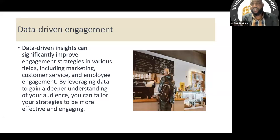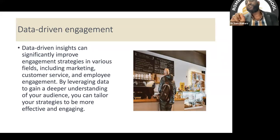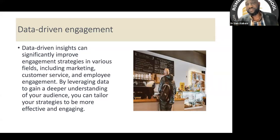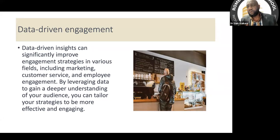I bought something from Jumia — a rechargeable fan. It was delivered, I paid on delivery, and when I tried to assemble it, I realized one small, tiny nut was missing from the package. I had to buy that nut for 20 naira, but I had paid 18,000 for the fan. That nut missing meant either there was no quality control or negligence in packaging. When it comes to customer engagement, it goes beyond the product offering.